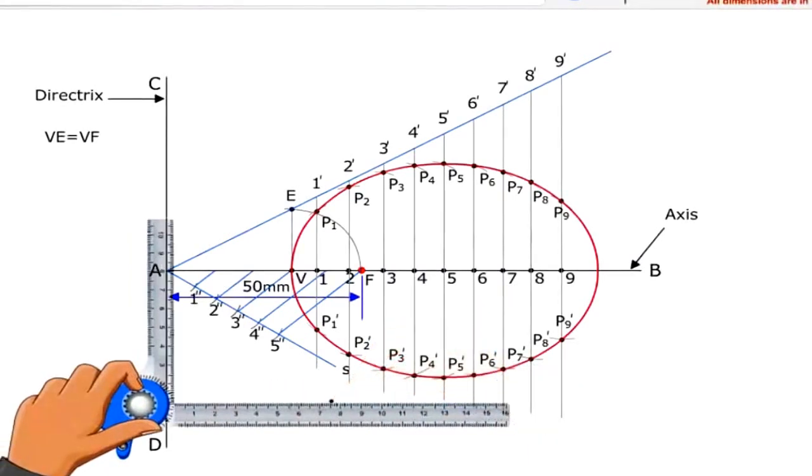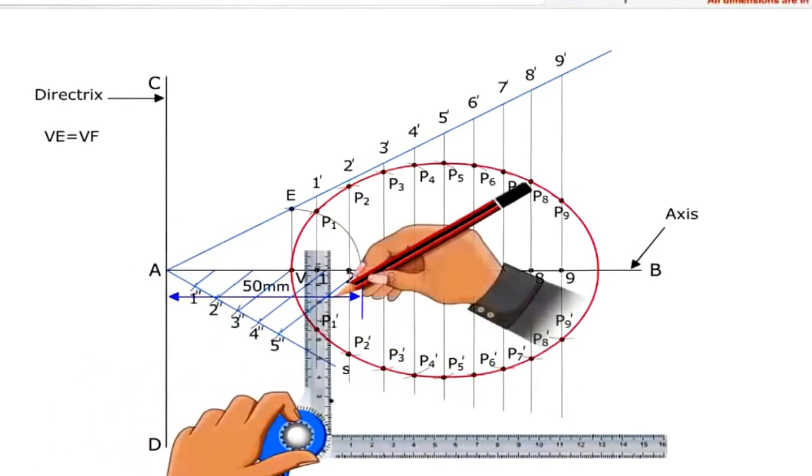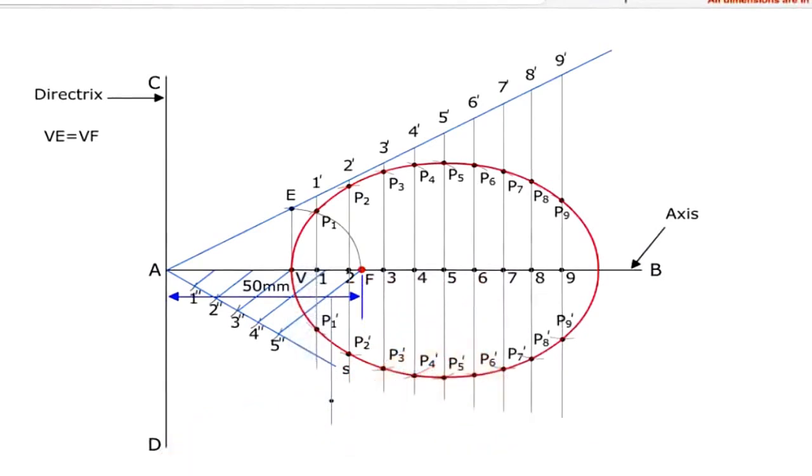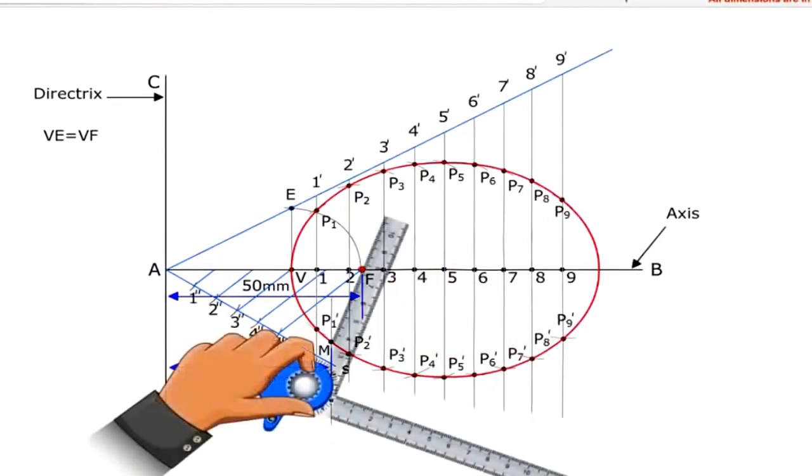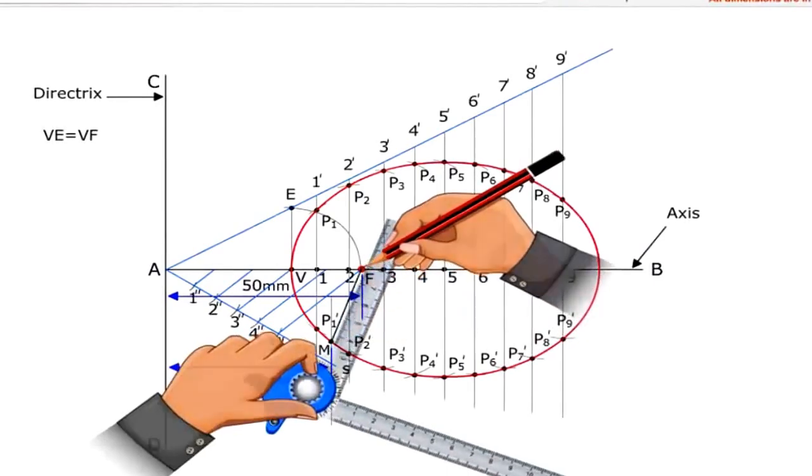Locate the point M which is at 40 mm from the directrix. Join M to F.